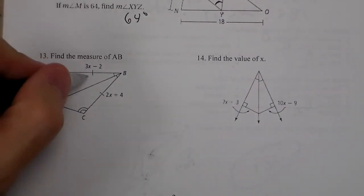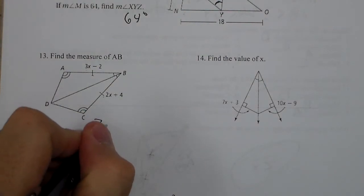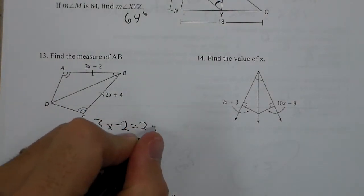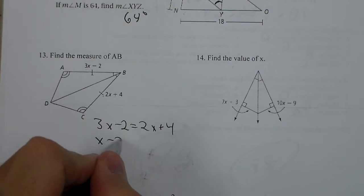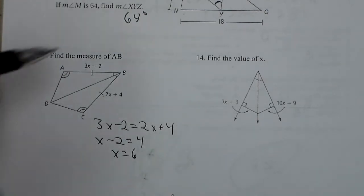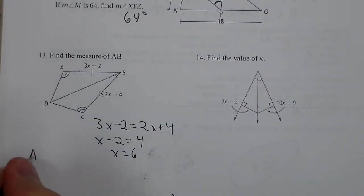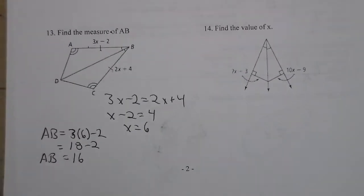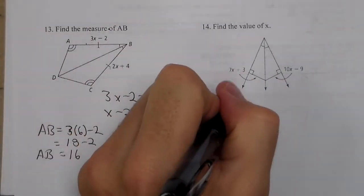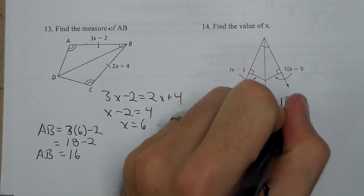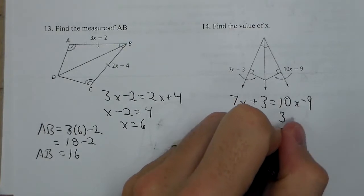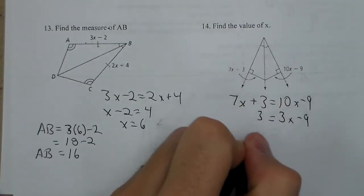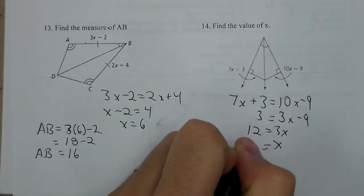For number 13, I'm going to set these two equal to each other. 3X minus 2 equals 2X plus 4. Subtract 2X from both sides. Add 2 and I get X equals 6, but they want me to find AB. So we'll say that AB is equal to 3 times 6 minus 2, or 18 minus 2, which is 16. For 14 to find the value of X, those are angle bisectors. So 7X plus 3 equals 10X minus 9. Subtract 7X, add 9 over, and I get X equals 4.